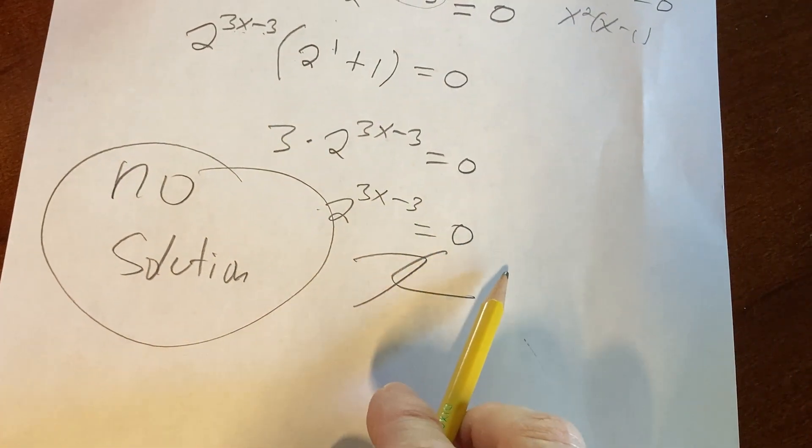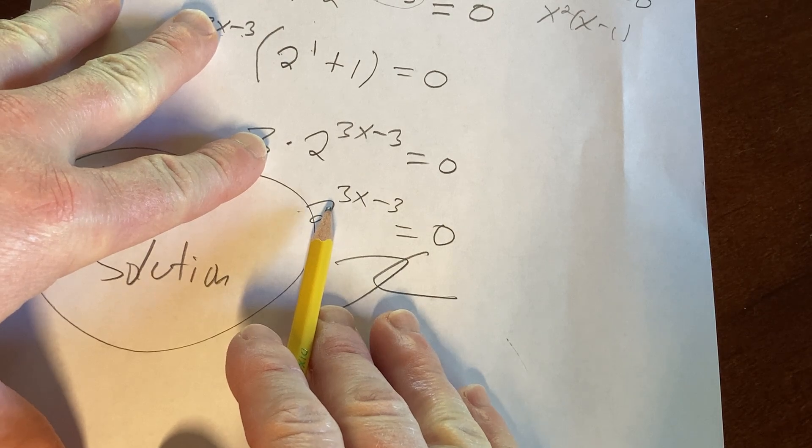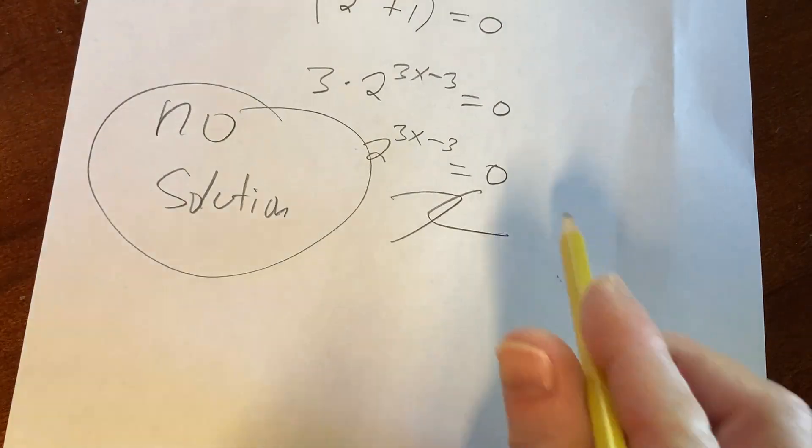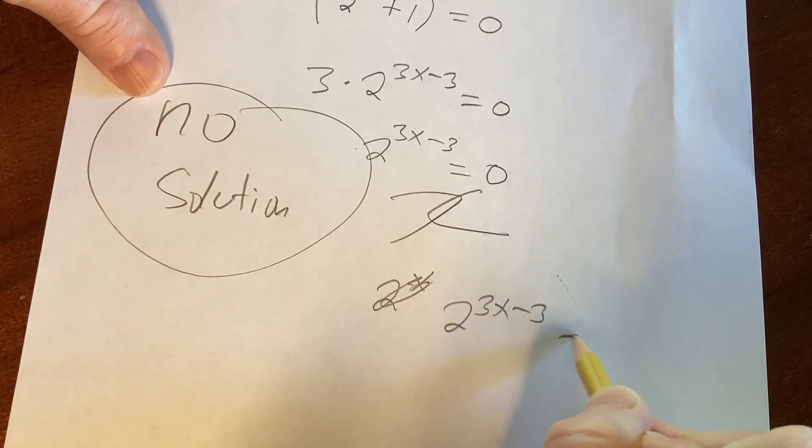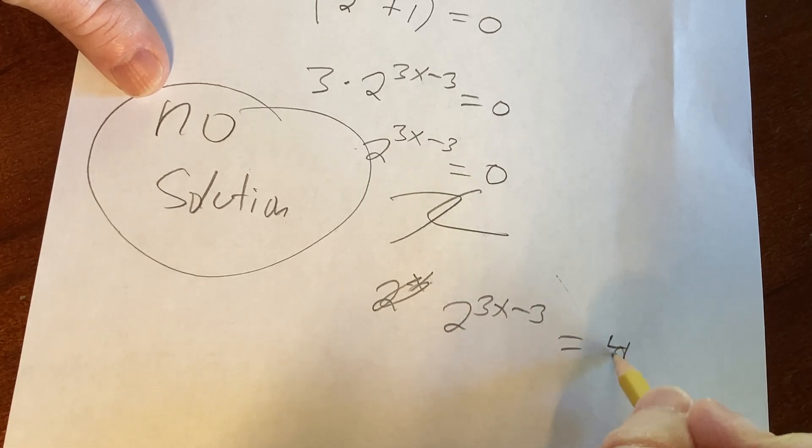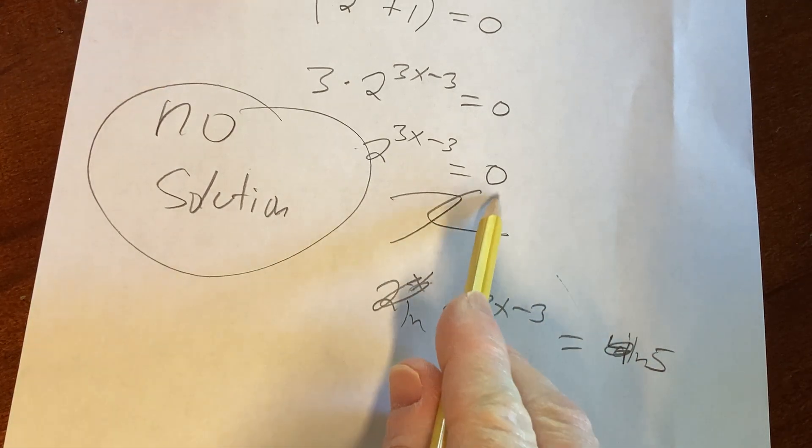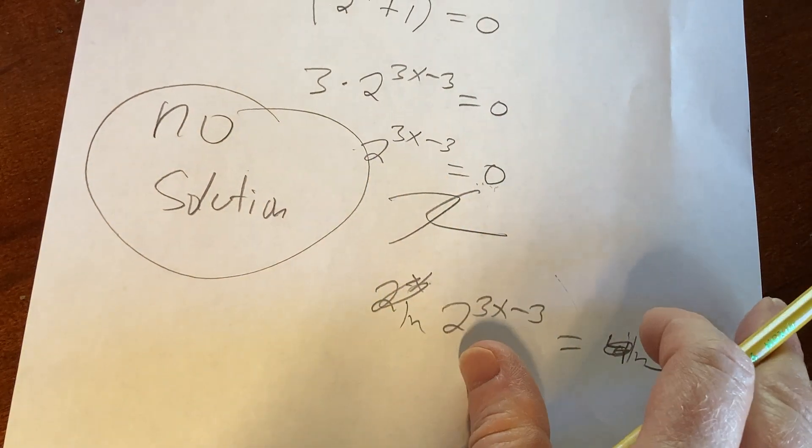Notice that if you try to take a log of both sides, you can't do that. A lot of times when you have an exponential on one side and a number on the other, you would take the log. For example, if it was, say, 2 to the 3x minus 3 equals 5, you could take the natural log of both sides and then proceed from there. But in this case, because it's 0, you can't take the natural log of 0. So there's no real way to proceed in a problem like this.